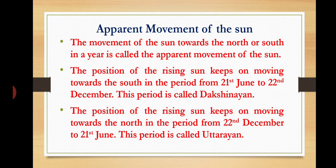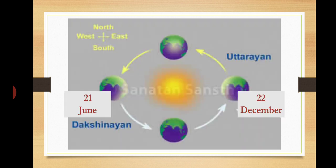Apparent movement of the Sun: the movement of the Sun towards the north or south in a year is called the apparent movement of the Sun. The position of the rising Sun keeps moving towards the south in the period from 21st June to 22nd December — this period is called Dakshinayan. The position of the rising Sun keeps moving towards the north in the period from 22nd December to 21st June — this period is called Uttrayaan.